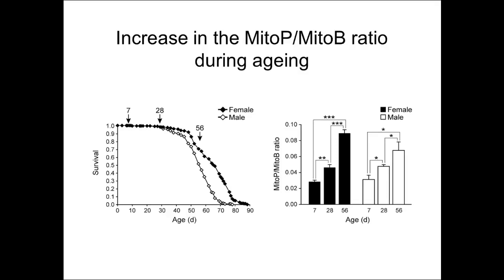We could infer this because when we intervened in the flies to alter things such as the amount of food they eat — which alters their lifespan — that did not change the levels of hydrogen peroxide, even though it did change the lifespan. So our current view is that while there is an increase in hydrogen peroxide with aging, it seems to be a consequence of aging rather than a cause.